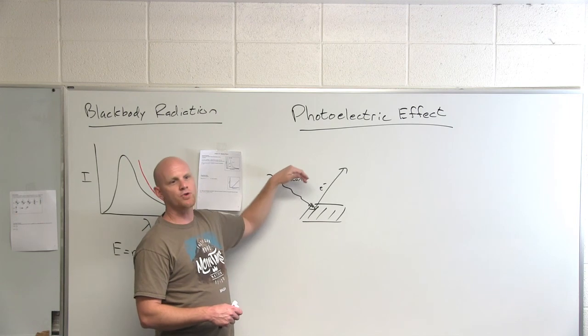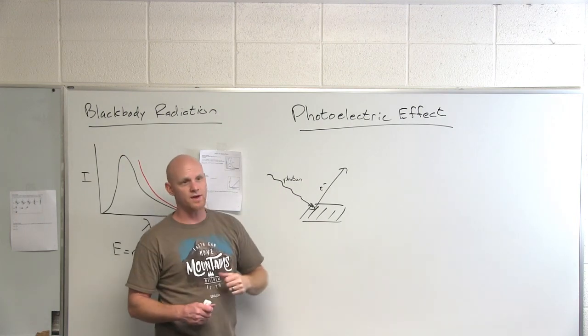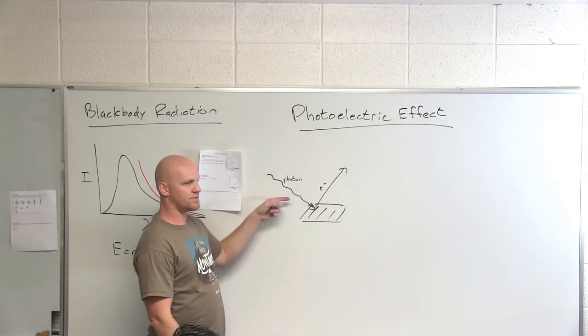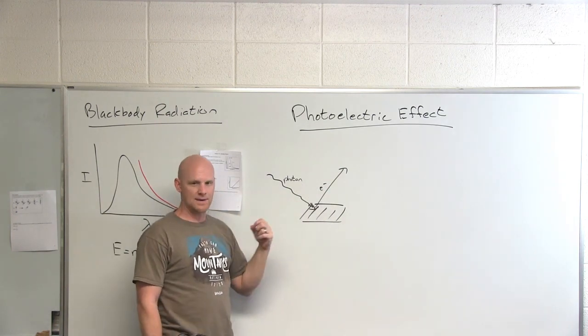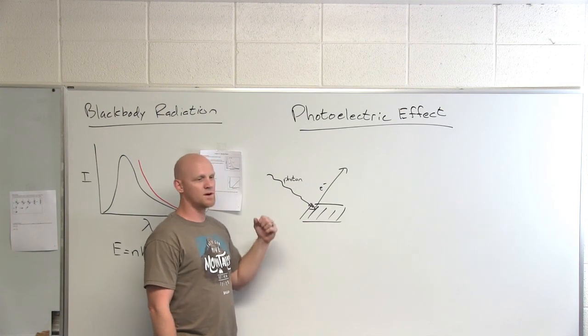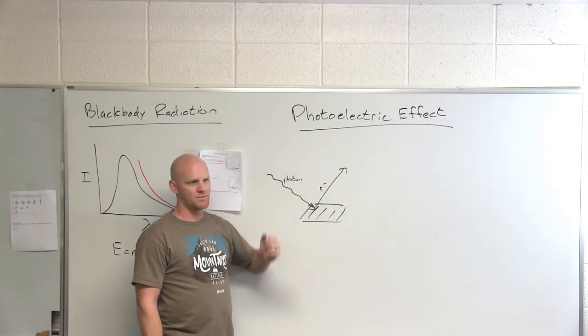If instead of green or blue light, let's say you dropped it down to red light, which is lower energy than green light, it turns out that you got no electrons. And it doesn't matter how intense you made the red light beam, you got zero electrons ejected. So they had a problem.